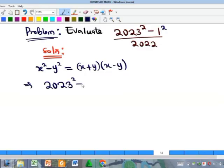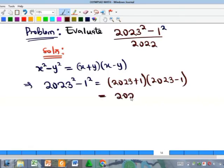And the implication of that is that we will get 2024 multiplied by 2022. If you watch now, you would see that means our 2023 squared minus one all over 2022 is simply equal to 2024 multiplied by 2022 all over 2022.